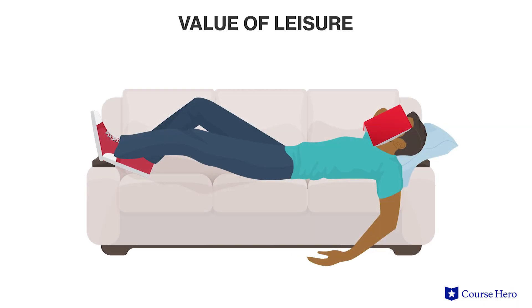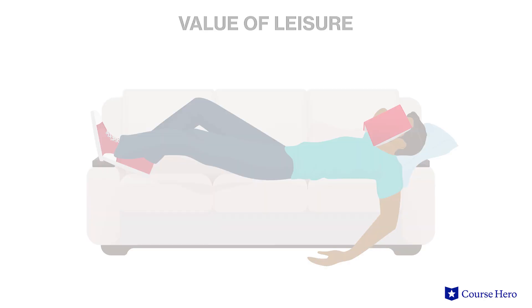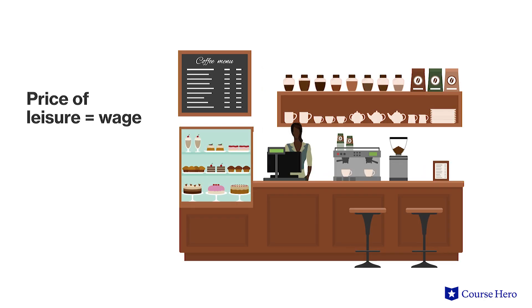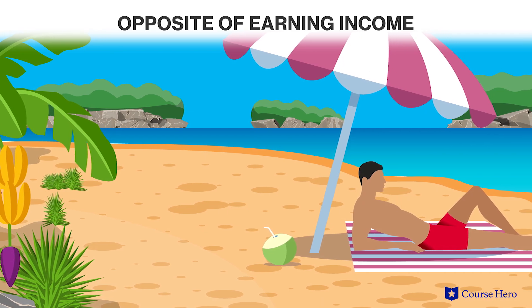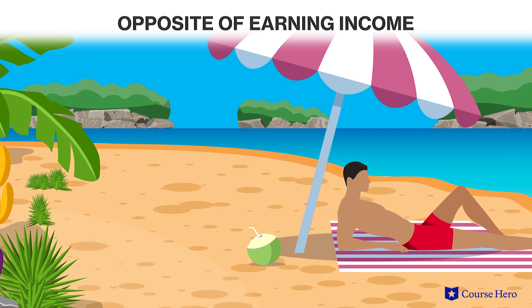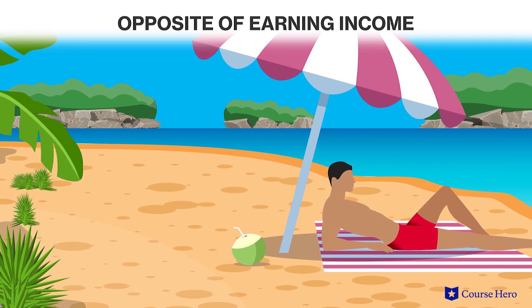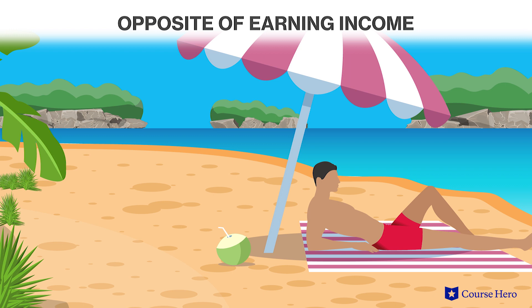Sitting on the couch is not free in an economic sense. Instead, the price of leisure is equal to the wage, since the wage is the opportunity cost of not working — that is, how much one gives up by consuming leisure rather than working. If an employee chooses to take a vacation, he or she is choosing not to perform labor, thus choosing the opposite of earning income. Time off comes at the cost of not gaining money.